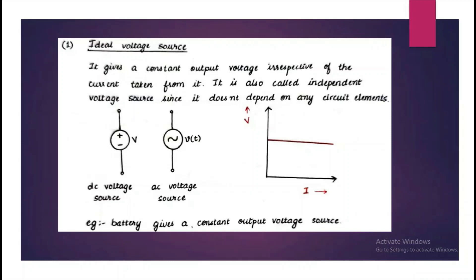If you look at the VI characteristic, you can see that the voltage is a constant irrespective of the current drawn from it. Example is a battery source which gives constant output voltage.